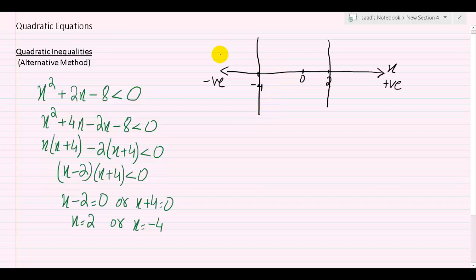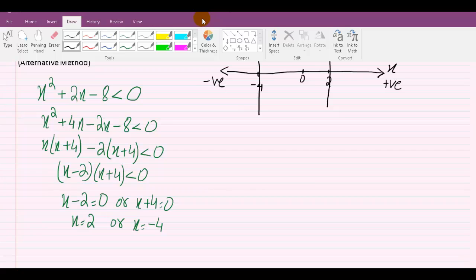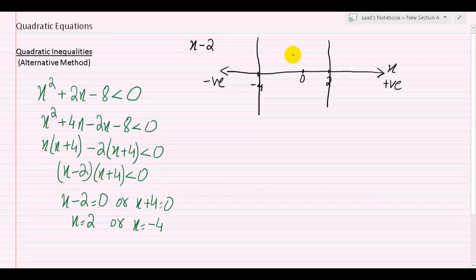Now what I want you to do is, let's bring x minus 2 under the spotlight. I'm going to go back to a brighter color. I think I'm going to go with red. So, x minus 2.